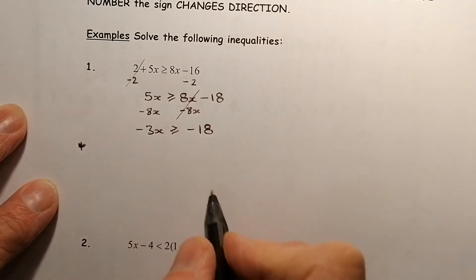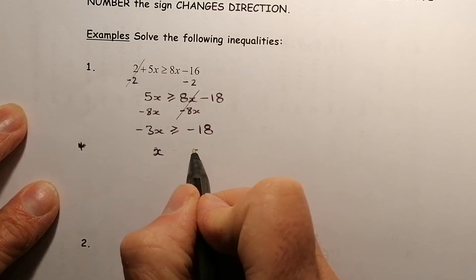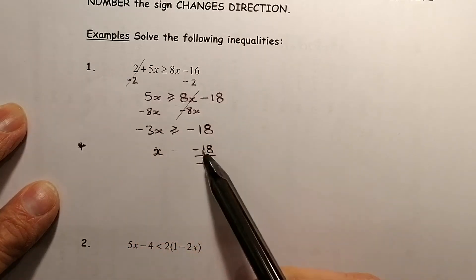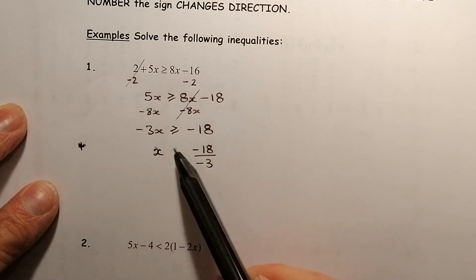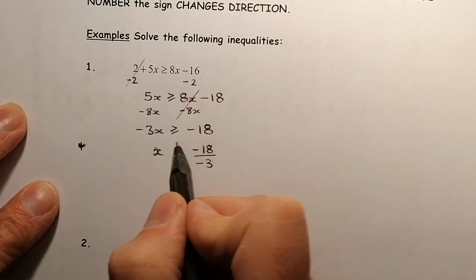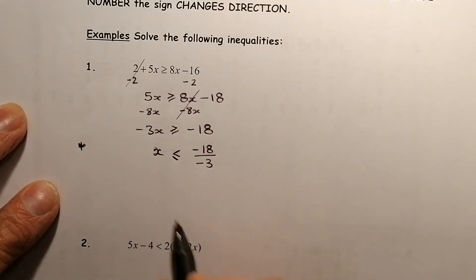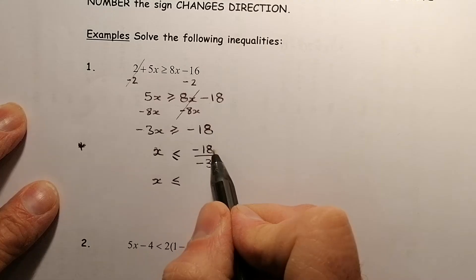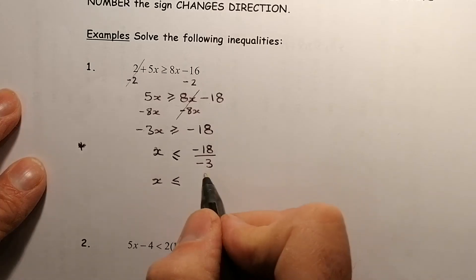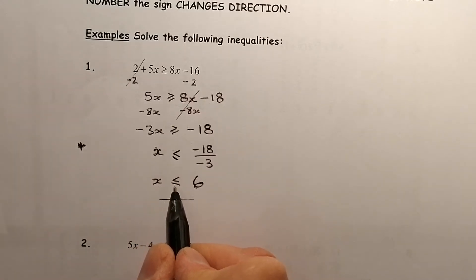This is a key part. We need to divide both sides by minus 3 to isolate x. But we must follow the special rule: if we're dividing by a negative, we reverse the sign. So instead of pointing to the right, it now points to the left. Minus 18 divided by minus 3 — the negatives cancel out, and 3 into 18 gives 6. So our solution is x is less than or equal to 6.